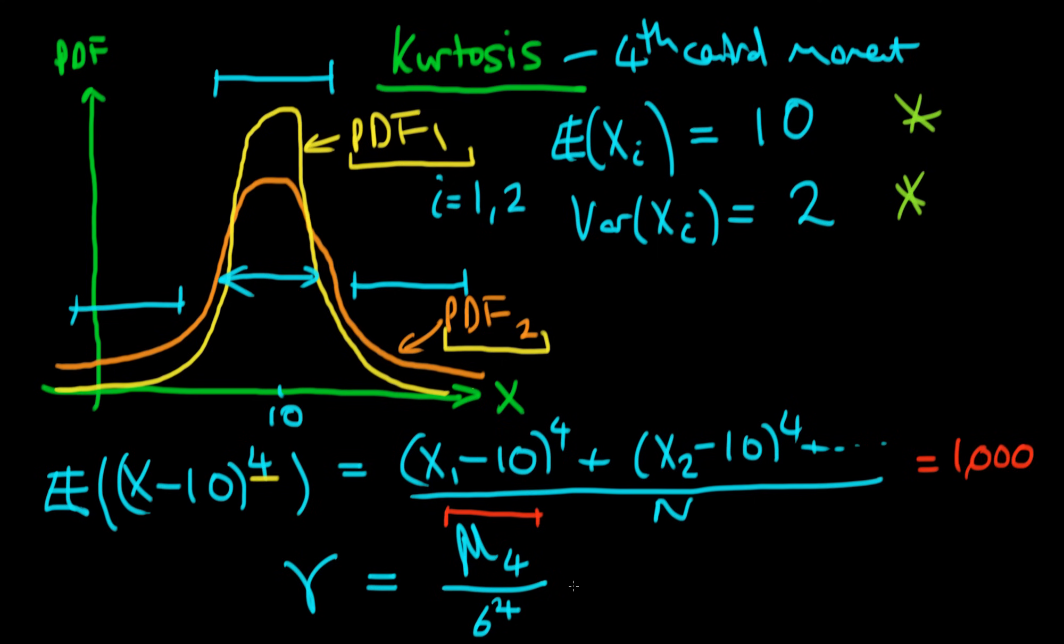But then finally what we do is we take off a value of three from this. And this seems like quite an arbitrary thing to do, and in a sense it is, but the reason we do this is because this is the kurtosis of a normal distribution.